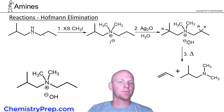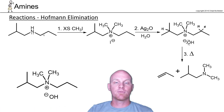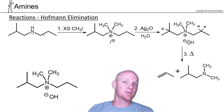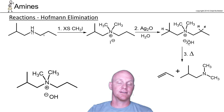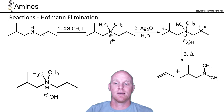In this Hoffman elimination, we're definitely doing elimination. We'll form an alkene as a product, but we'll be forming the least-substituted alkene possible — the Hoffman product — which is where the idea that the Hoffman product is the less-substituted alkene comes from.